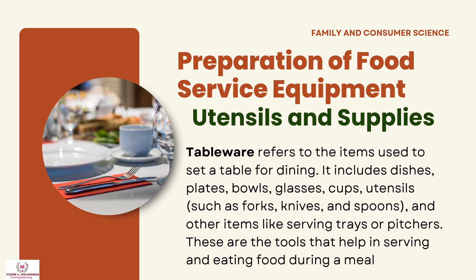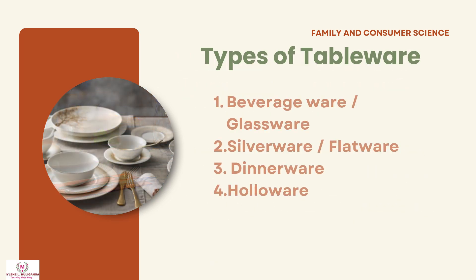Tableware refers to the items used to set a table for dining. It includes dishes, plates, bowls, glasses, cups, utensils such as forks, knives, and spoons, and other items like serving trays or pitchers. These are the tools that help in serving and eating food during a meal. The types of tableware are: beverageware or glassware, silverware or flatware, dinnerware, and hollowware.